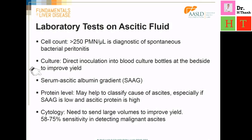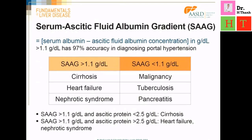We also need to measure the ascitic fluid albumin concentration and ascitic fluid protein concentration to help identify the etiology of the ascites. The serum ascitic fluid albumin gradient, or SAAG, is calculated as the difference between the serum albumin concentration and the ascitic fluid albumin concentration in grams per deciliter. If the SAAG is low, such as less than 1.1 grams per deciliter, the ascites is usually related to either malignancy, infection, or inflammation. However, if the SAAG is elevated at more than 1.1 grams per deciliter, the cause is usually related to cirrhosis, heart failure, or nephrotic syndrome.